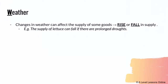Firstly, weather — changes in weather can actually cause supply to either rise or fall. Think of it like crops. When there is a drought, the supply of things like vegetables — carrots, potatoes, lettuce — will definitely fall, because there's not enough water for them to grow. Likewise, if there is a flood, it may destroy vegetation, but higher rainfall could also help to increase the supply of your crops.